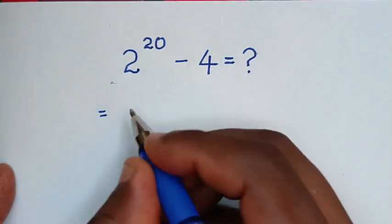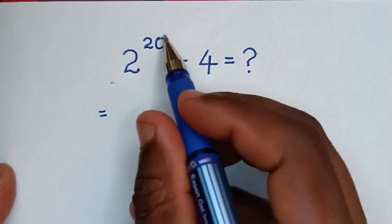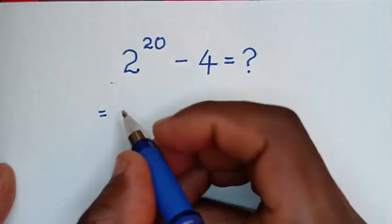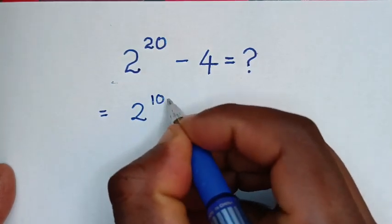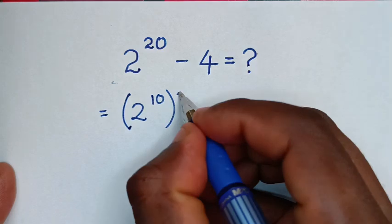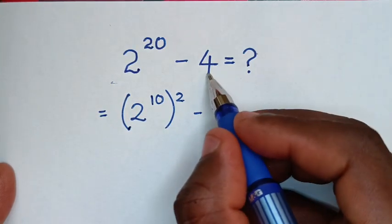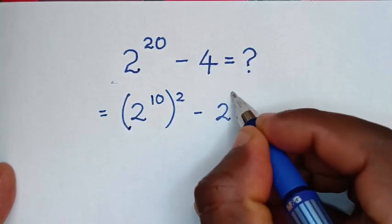So it will be equal to 2 to the power of 20, which is 2 to the power of 10 squared, minus 4. And 4 is 2 squared.